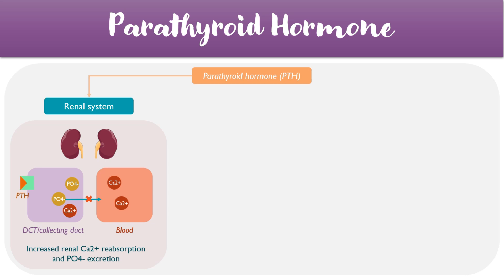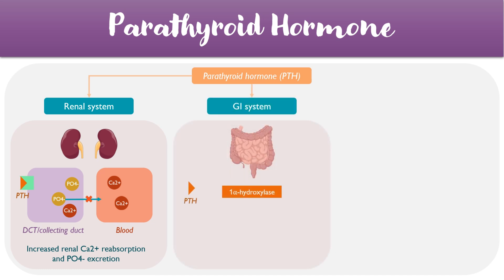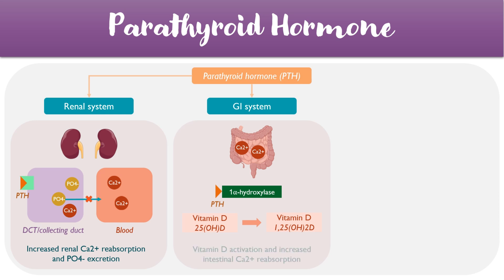The second system which parathyroid hormone acts upon is the gastrointestinal system. In this case, parathyroid hormone activates a specific enzyme called 1-alpha-hydroxylase, and when this enzyme is activated, it catalyzes the conversion of an inactive form of vitamin D to the active form of vitamin D. And when there's more of the active form of vitamin D, it helps to retain calcium within the GI system, allowing more to be reabsorbed back into the blood.